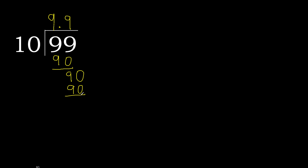90 minus 90 is 0. 0, therefore finish it. 99 divided by 10 is 9.0.